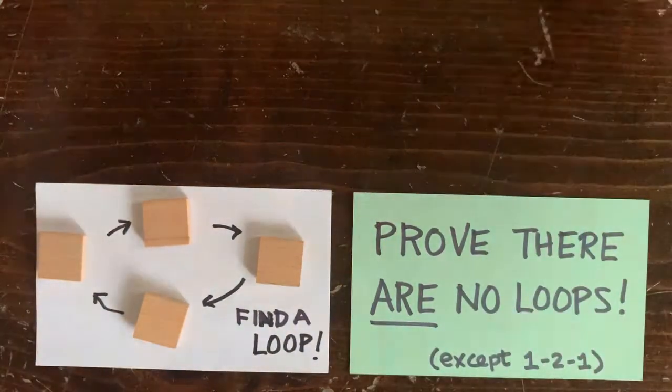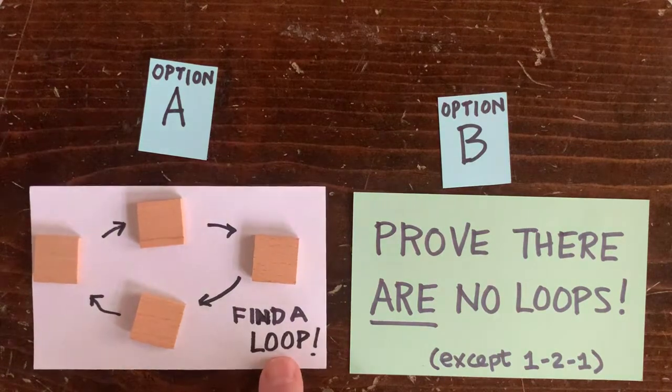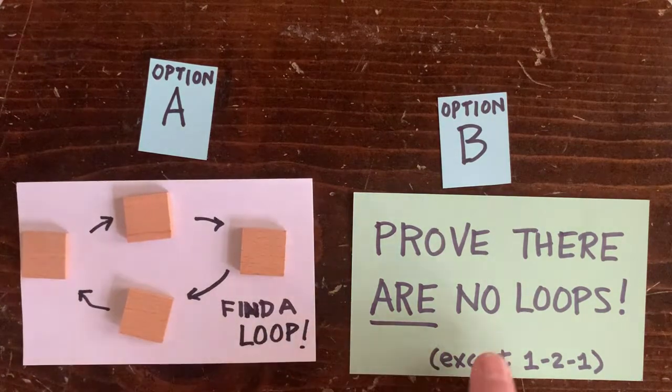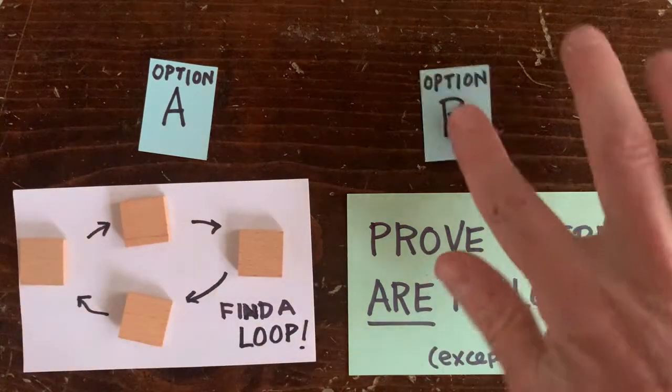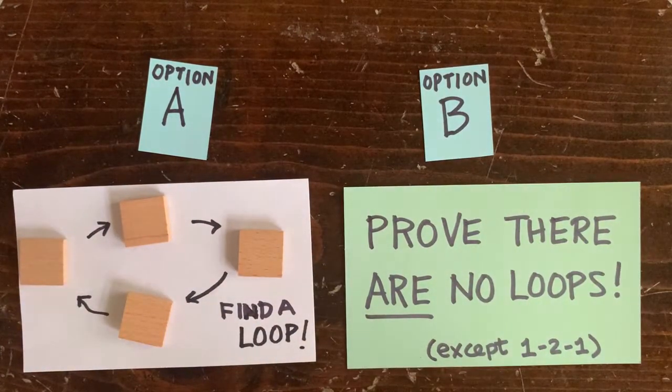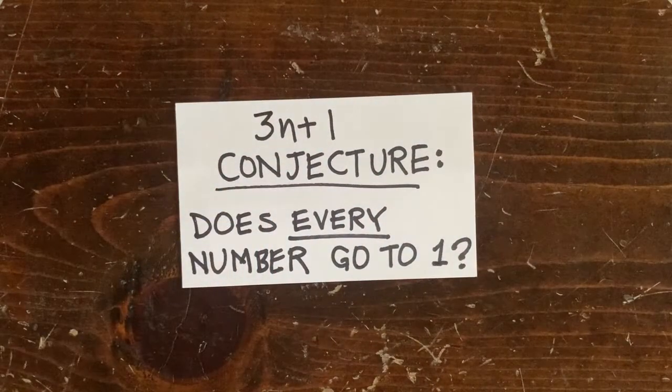Another philosophical point. Even though probability here is just a heuristic, maybe we should pay attention. I mean, if we believe in our heart of hearts that the chance of finding a loop is astronomically small, then maybe we should switch from option A, go find a loop, to option B, prove that there are no loops. So let's ponder that in between this episode and the next episode. See you there.